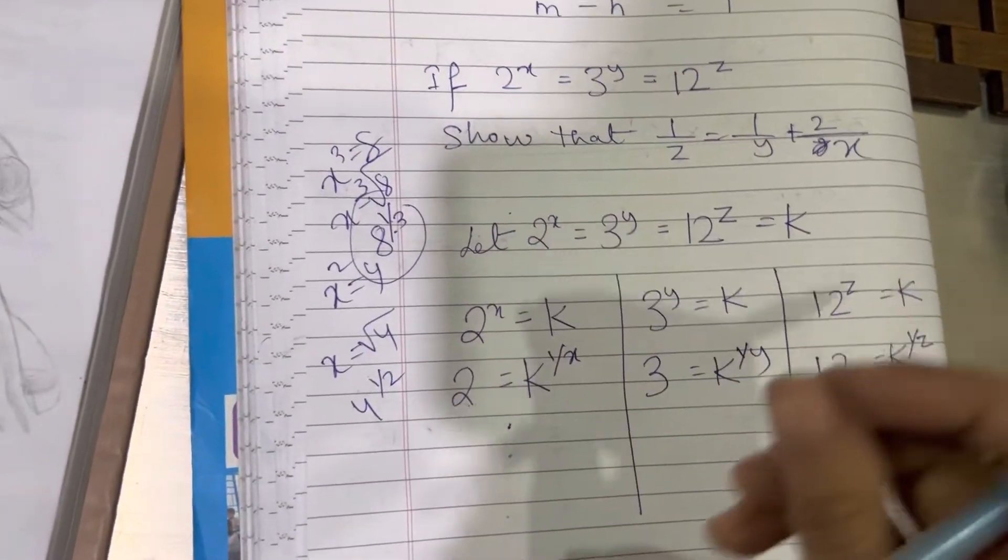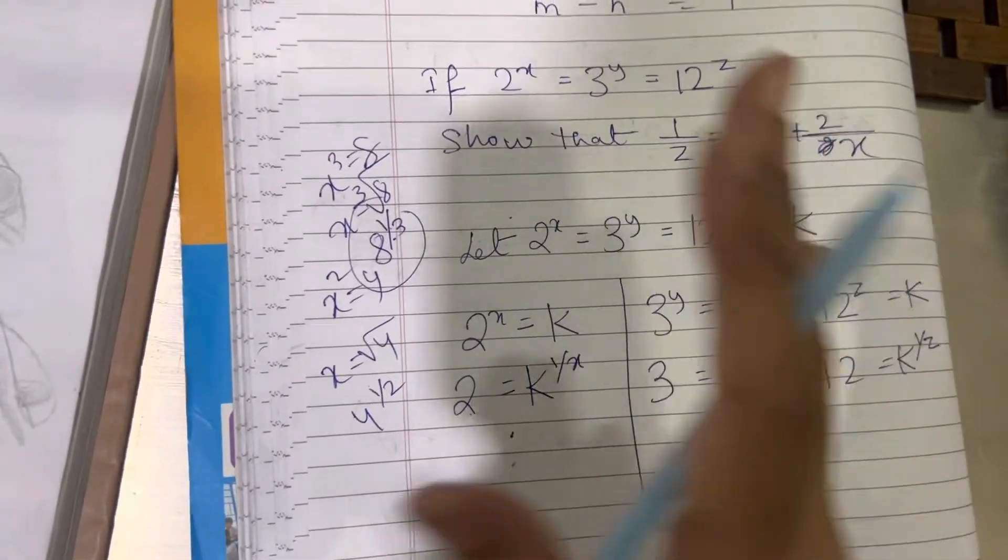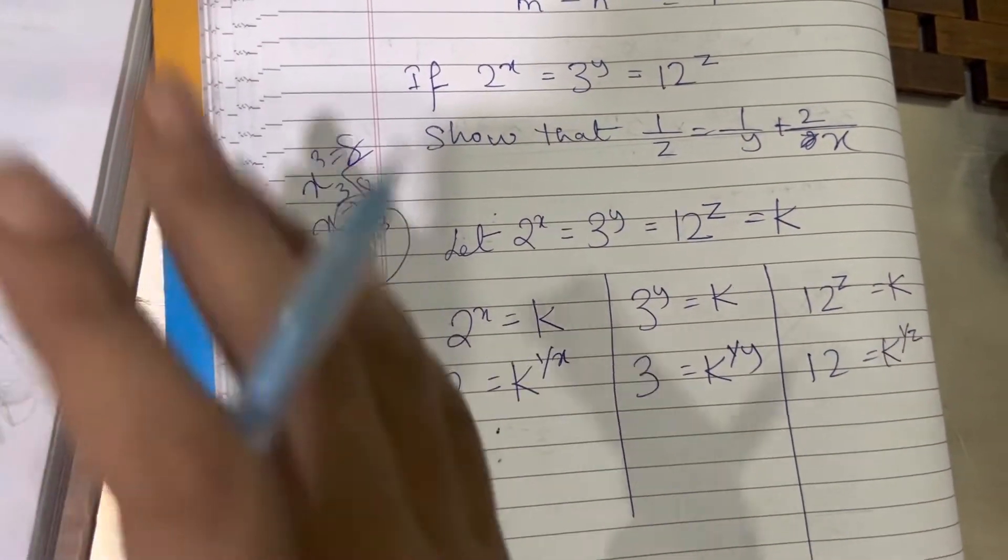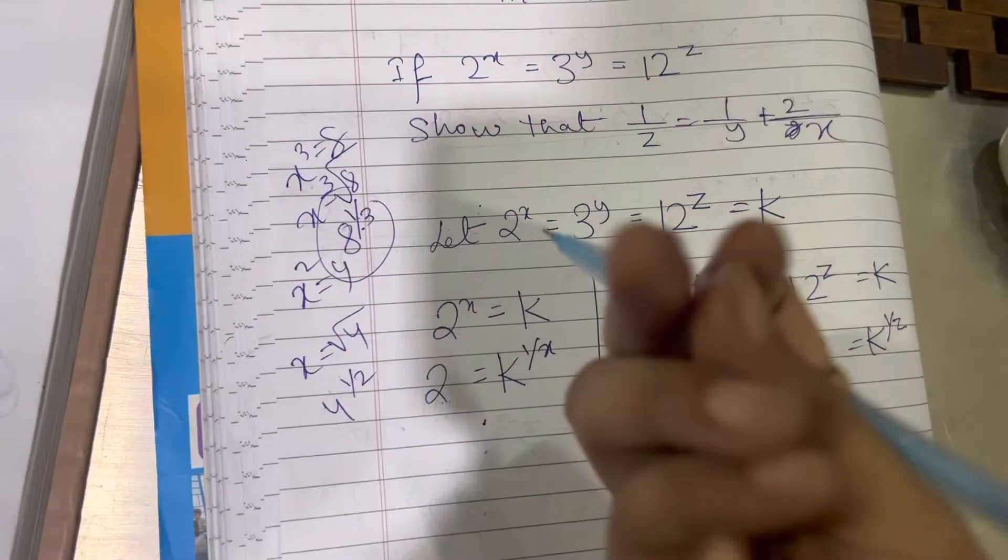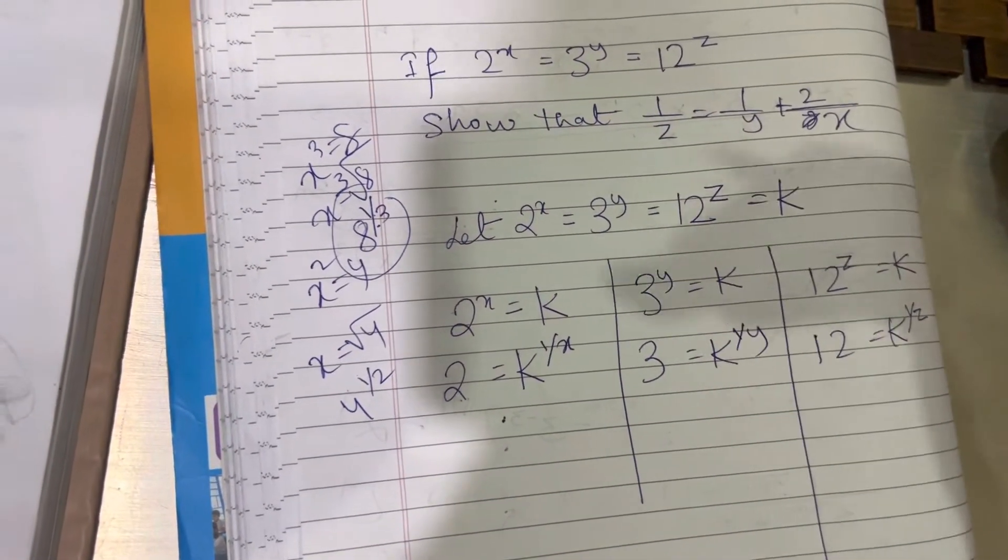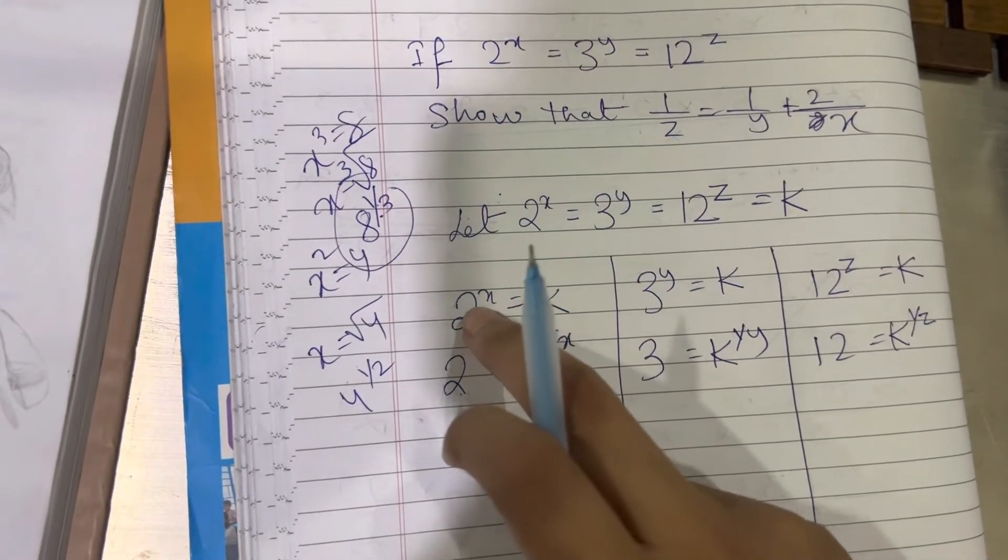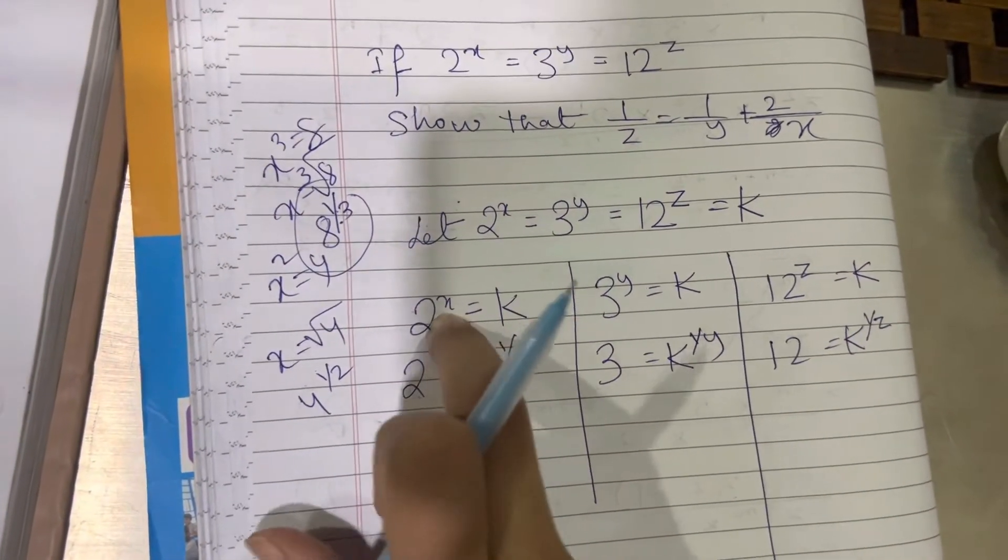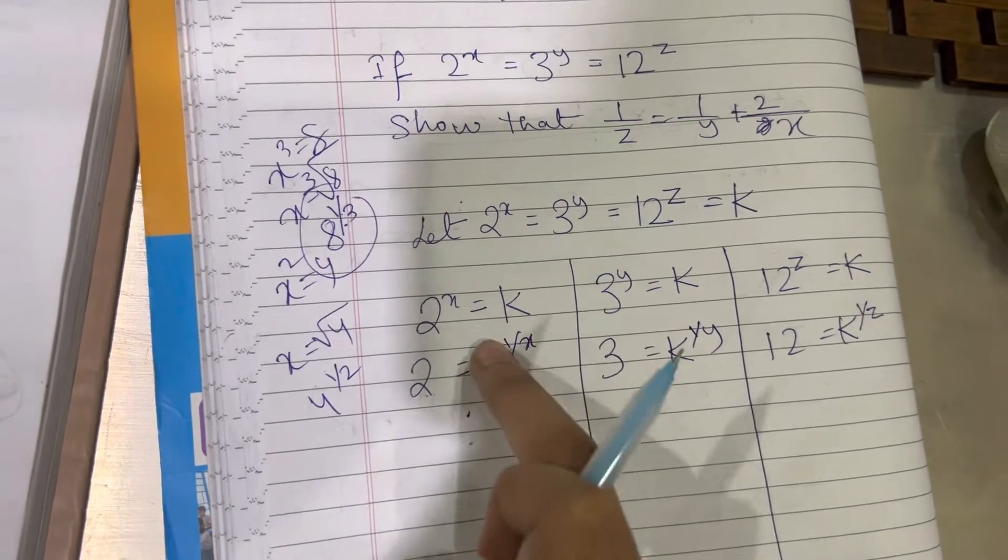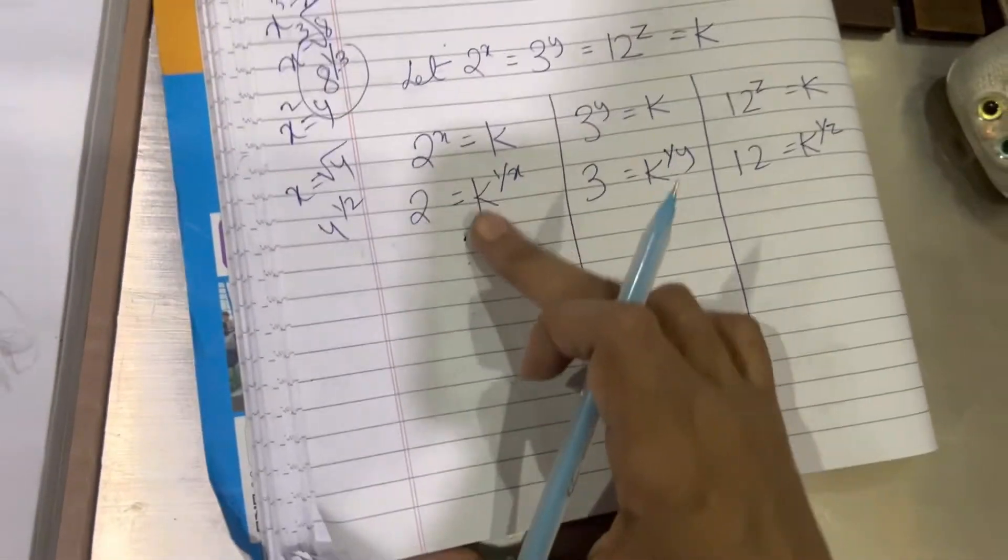So be it any equation, not only in case of power, when you shift anything from left to right or right to left, if it's a plus it becomes minus, if it's a minus it becomes plus. If it's a division, it goes to the other side and gets multiplied, vice versa. The same thing happens in case of power. When you bring the power here, it becomes the reciprocal of the power.